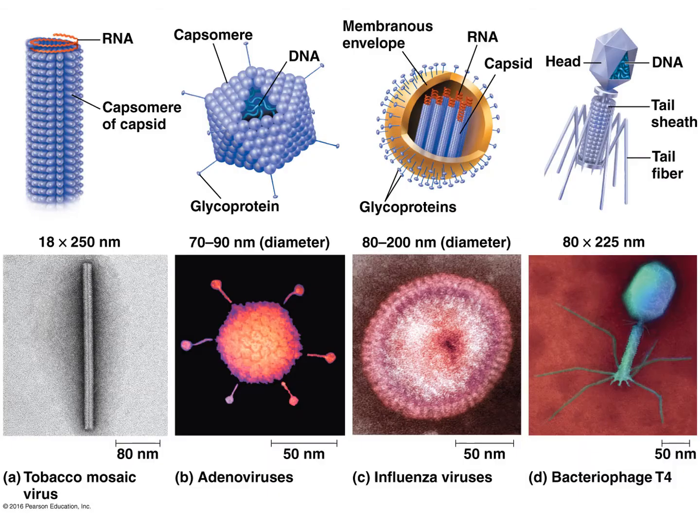Viruses actually come in lots of shapes and sizes. All forms of life that we know of have viruses specific to them — every form of life is a host to some kind of virus. The tobacco mosaic virus on the far left is the simplest form. The adeno virus infects people, mostly children, causing cold-like symptoms. The influenza virus is something more similar to the novel coronavirus.